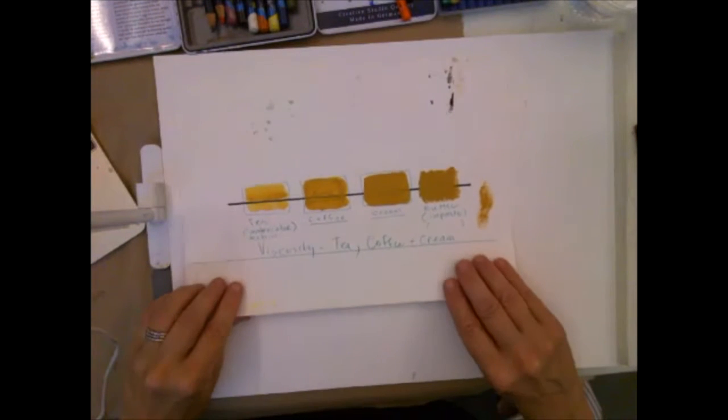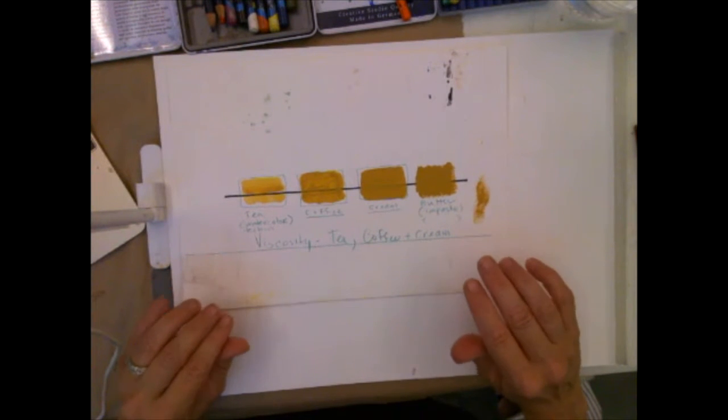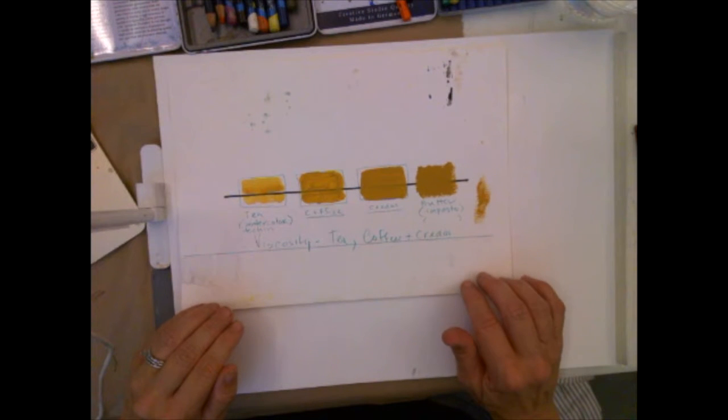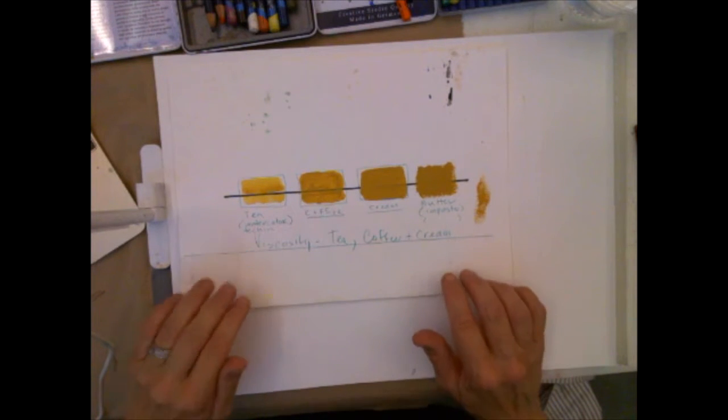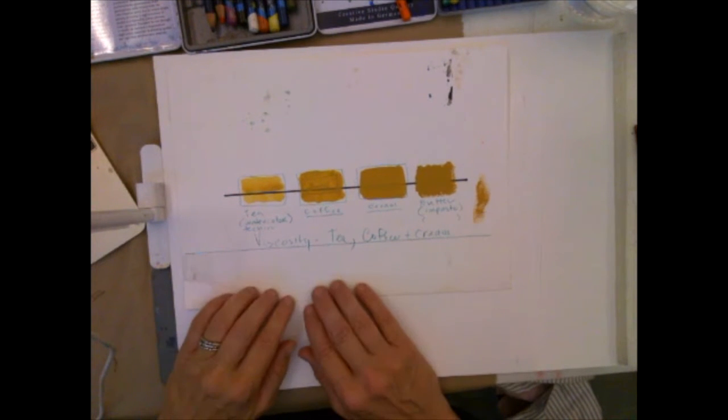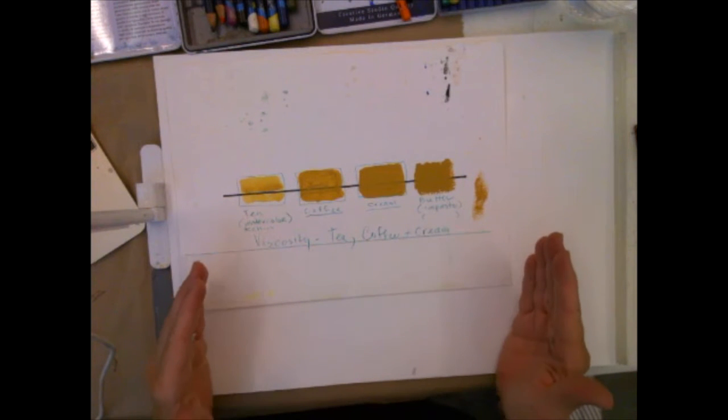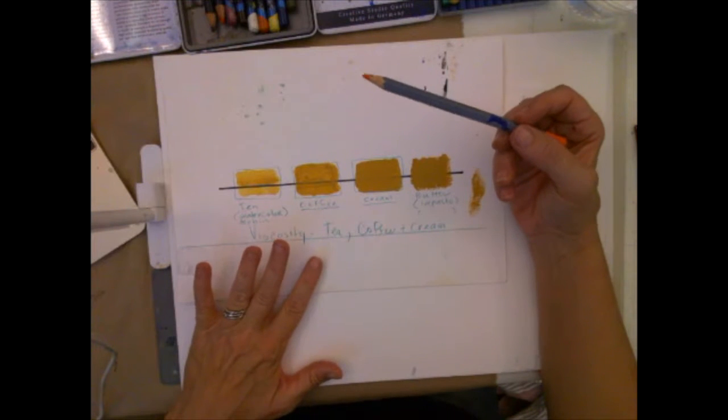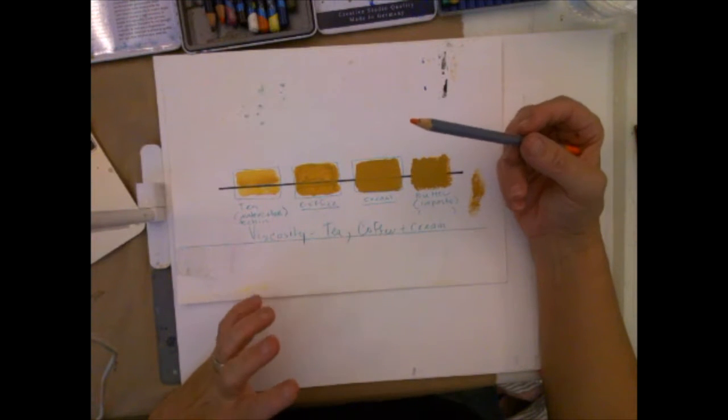This is the first concept that I want to talk about, which is viscosity versus fluidity. When you use anything like gouache or watercolor, you're going to be talking about some kind of viscosity. Each technique that you do with each medium will have an ideal viscosity.